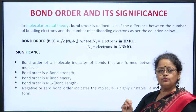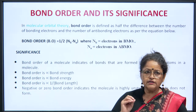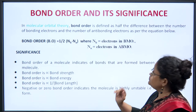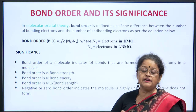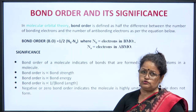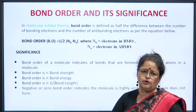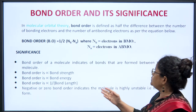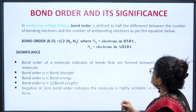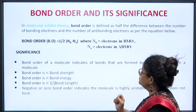Once we know the bond order, what information do we get from it? What does bond order tell us? The significance of bond order is important from both exam and study points of view. With knowing the bond order, you can get to know a lot of things about the molecule. Number one, bond order of a molecule indicates the number of bonds formed between two atoms in a molecule.